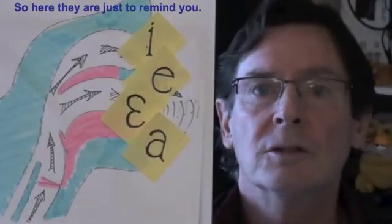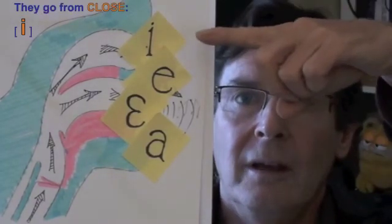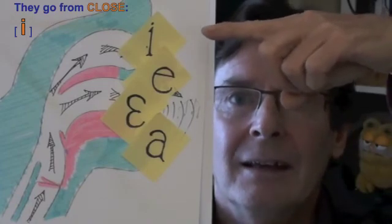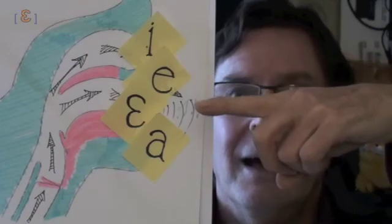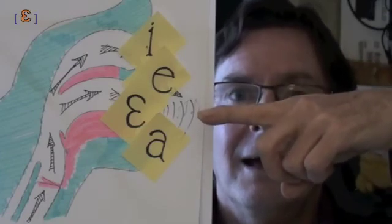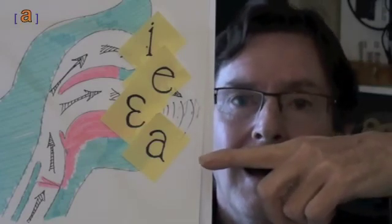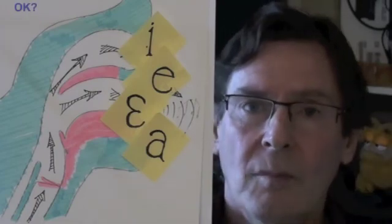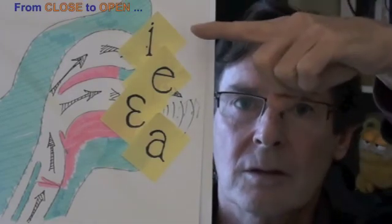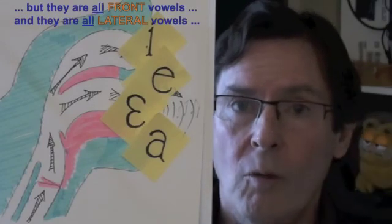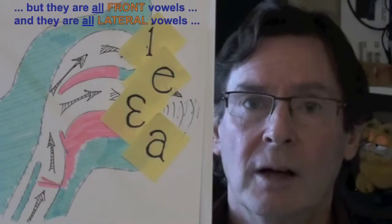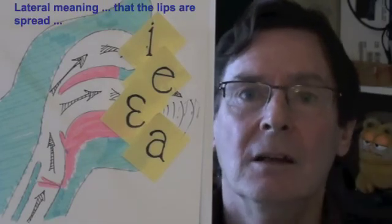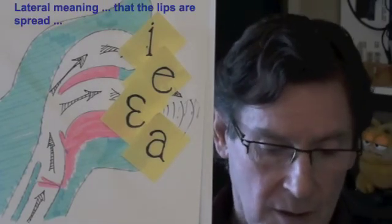So that is the set of front lateral vowels. Here they are, just to remind you — they go from close: EE, E, E, AA — from close to open, but they are all front vowels and they are all lateral vowels, lateral meaning that the lips are spread.